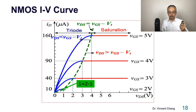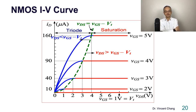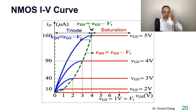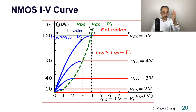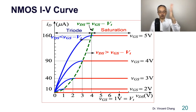Continuing: for VGS equals 3, the boundary is at VDS equals 2; for VGS equals 2, VDS equals 1, since 2 minus 1 equals 1. So for the boundary: VGS equals 5 corresponds to VDS equals 4; VGS equals 4 corresponds to VDS equals 3; VGS equals 3 corresponds to VDS equals 2; VGS equals 2 corresponds to VDS equals 1.